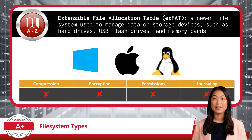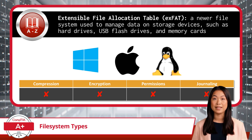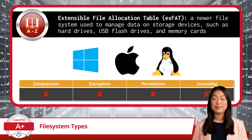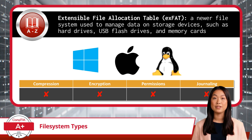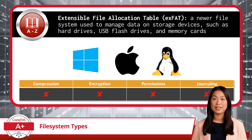Lastly, we have the Extensible File Allocation Table, or exFAT. exFAT is a newer file system used to manage data on storage devices such as hard drives, USB flash drives, and memory cards. It supports large files and is compatible with Windows, Mac OS, and Linux. exFAT does not support file compression, encryption, or advanced permissions, and also lacks journaling, making it similar to FAT32. exFAT is an excellent choice for transferring large files exceeding 4GB in size between different operating systems — 4GB being the file size limit of the older FAT32 file system.